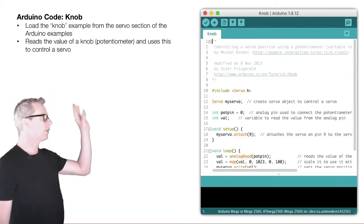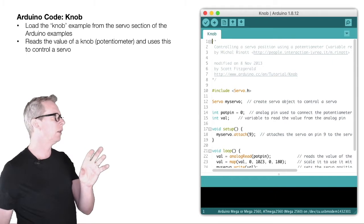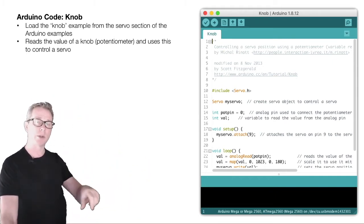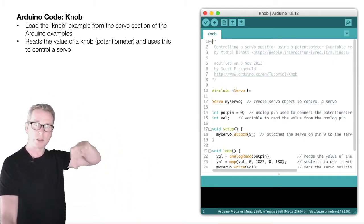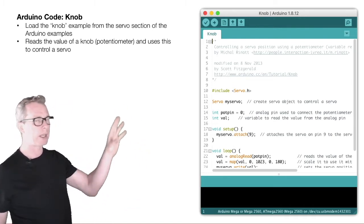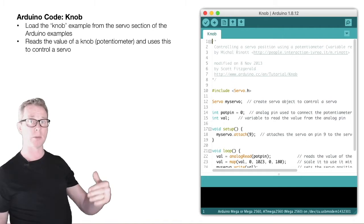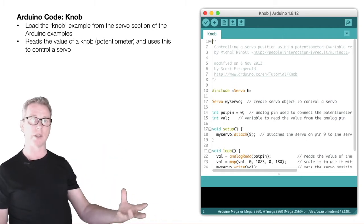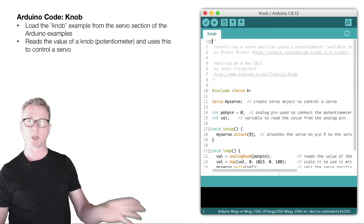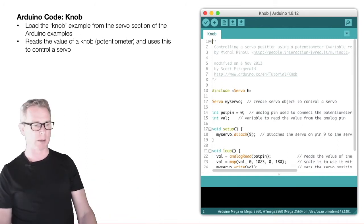So that's those three examples: setting the LED color, controlling a servo, and taking some data into the Arduino from a knob and using that to control the servo. I want to build on these three basic examples and show how we can go from just having the code working on the Arduino, to having it working between the Arduino and the computer to get this communication happening.